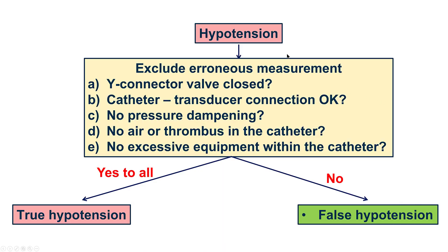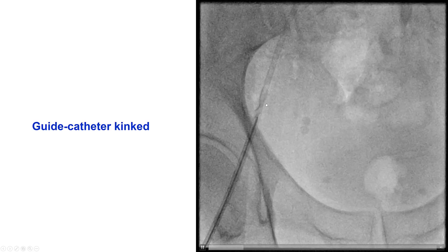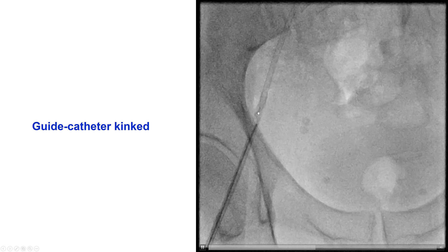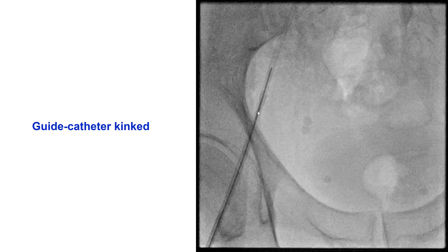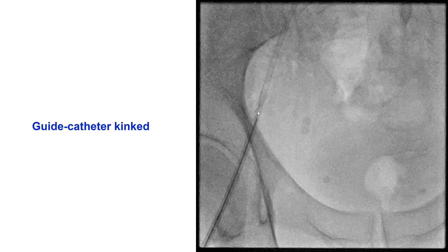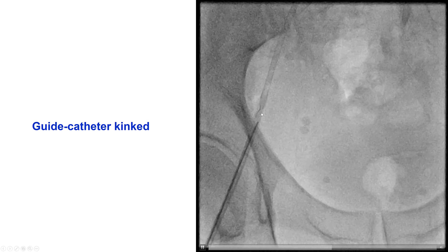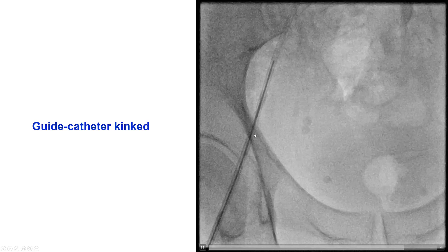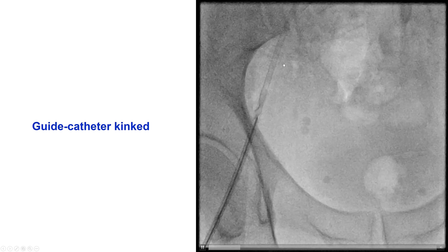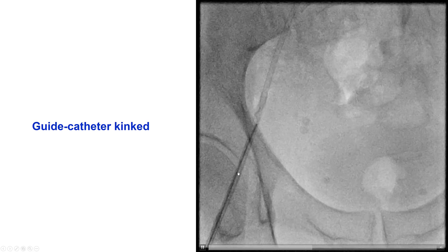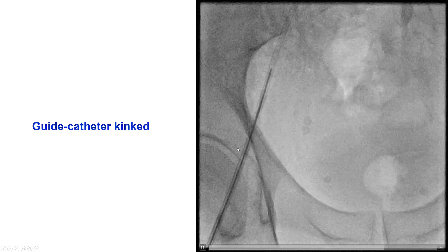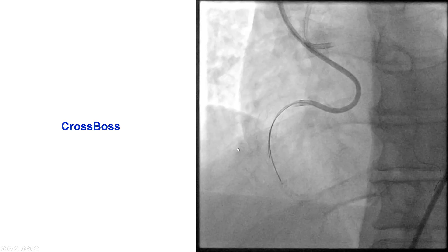In our case, we checked the pressures and the transducers, and it turned out that we had actually kinked the guide catheter. So this was not true hypotension — it was pressure dampening because we had kinked the guide catheter next to the sheath. We were able to advance a guide wire through the area of kinking, remove the guide catheter, and then insert a new guide catheter to prevent the problem.